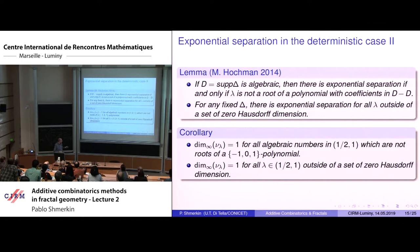This corollary is a new result — it wasn't known before my paper. It was previously known for Hausdorff dimension (Hochman's result), but this is for the Frostman exponent, which is a stronger statement. Hochman introduced exponential separation and proved something; I proved something stronger, though my proof is very much inspired by his.